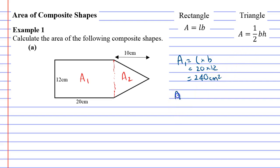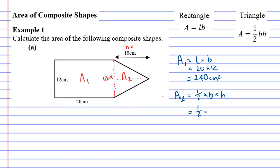Now we're going to find the area of our triangle — area 2. The formula is half times base times height. We need to look at our triangle and figure that out. The height is actually 10, because that's the distance from the base to the tip of the triangle. We need to find the length of the base. It hasn't been labeled, but we know this side is 12, so this side must also be 12. So we're going to go half times the base of 12 times the height of 10, and that comes out to 60 centimeters squared.